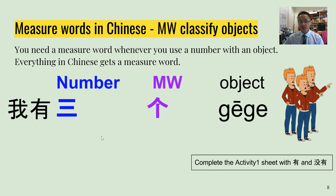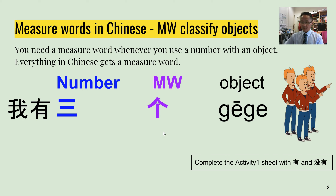That's it for measure words and classifiers for today. Don't forget — for any number of objects you're talking about, you must have a measure word in Chinese. If you forget a specific measure word, you can use the universal measure word 个 to get by. 同学们，再见!